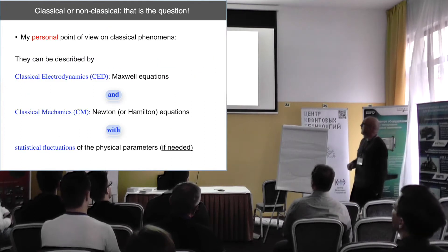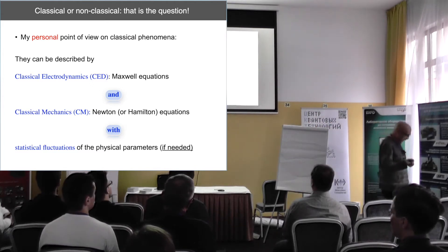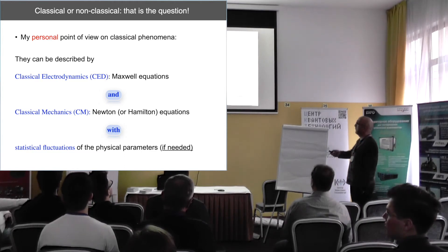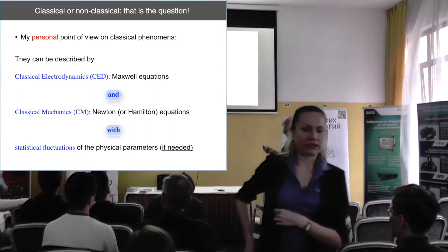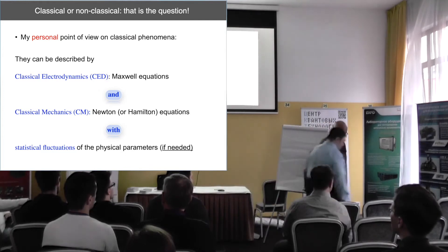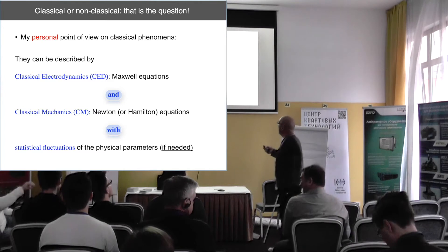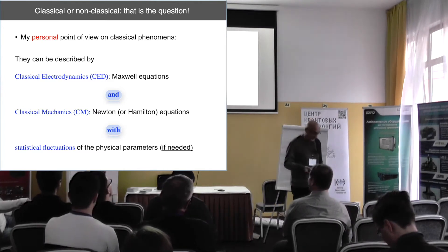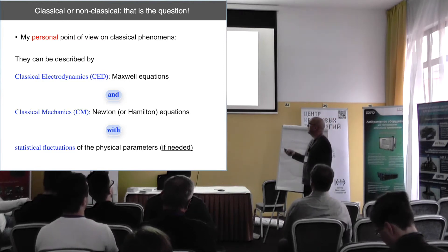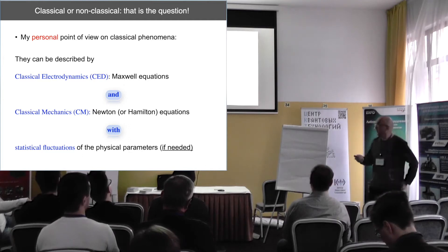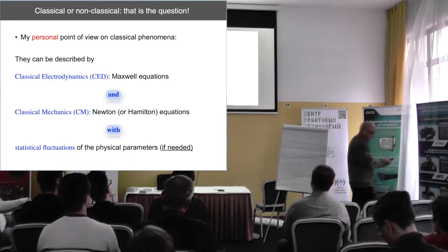In short, the idea is classical or non-classical. The question is: what is a classical phenomenon? I would say that a classical phenomenon is one that can be described both using Maxwell equations — what we call classical electrodynamics — and with classical mechanics, Newton equations. And you can introduce statistical fluctuations that can be easily incorporated into the model on the physical parameters.